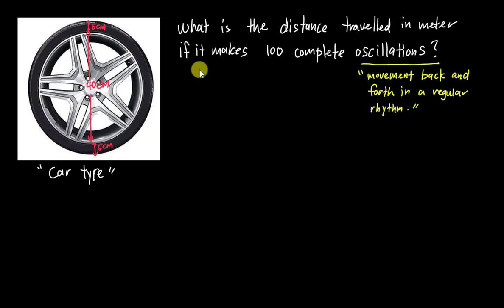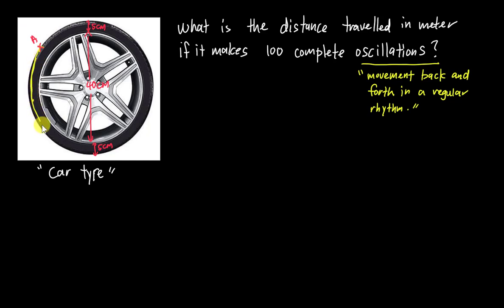We just need to know how far the tire can travel if it only rotates once — one cycle. In order to know the distance traveled, we pay attention to the outer layer of the tire. Let's say this is a starting point A, and we're going to rotate all the way from the outer layer.